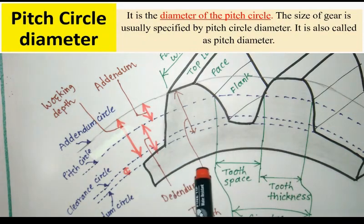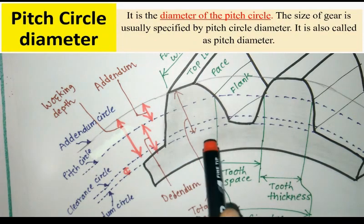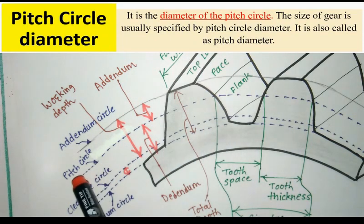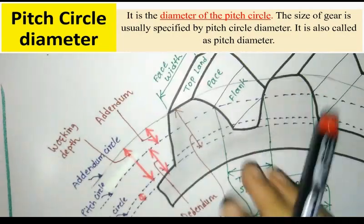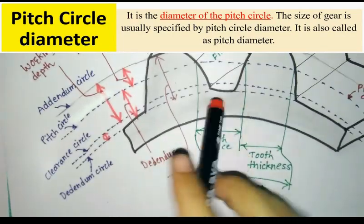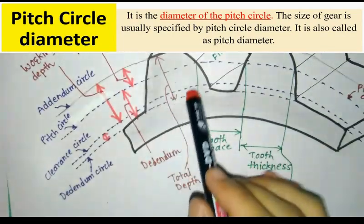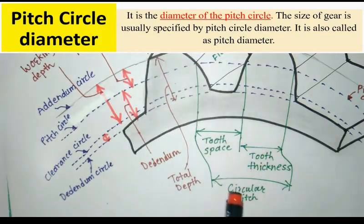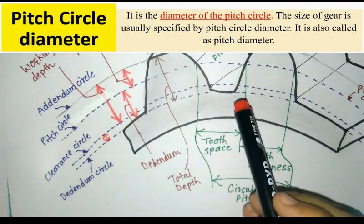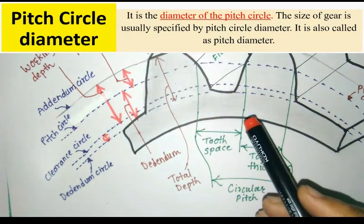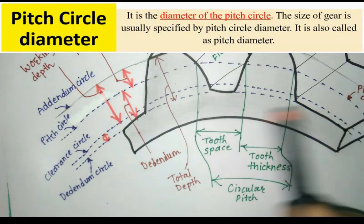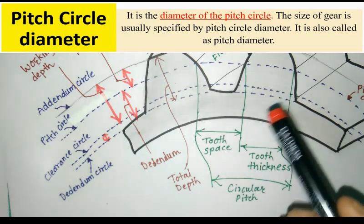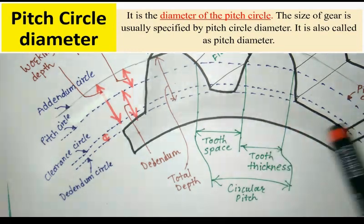Next one is the P circle diameter. It is the diameter of a P circle. The size of a gear is usually specified by the P circle diameter. It is also called the pitch diameter.